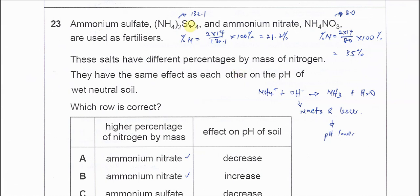Ammonium sulfate and ammonium nitrate are used as fertilizers, and these two salts have different percentage by mass of nitrogen.